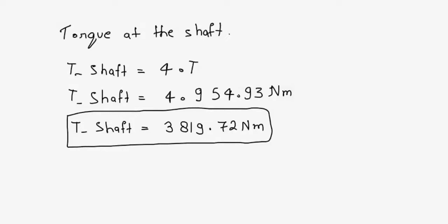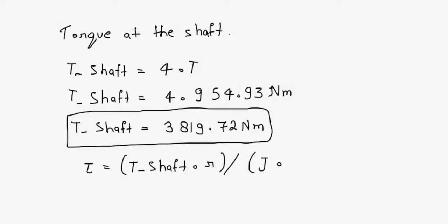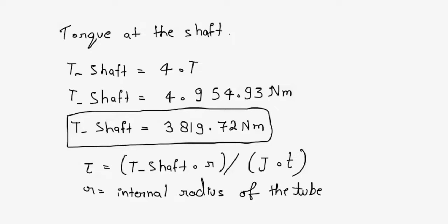Step 3: Calculate the maximum stress in the tube. The torque transmitted through a shaft can be related to the shear stress at the dimension of the shaft using the formula: stress equals T_shaft multiplied by r, divided by J. Where r equals the internal radius of the tube, given as 30 mm divided by 2, equals 15 mm, equals 0.015 m.